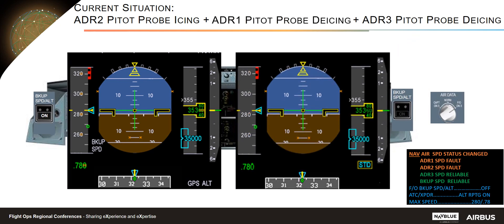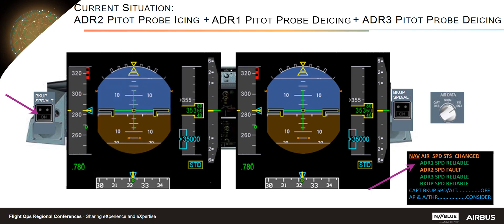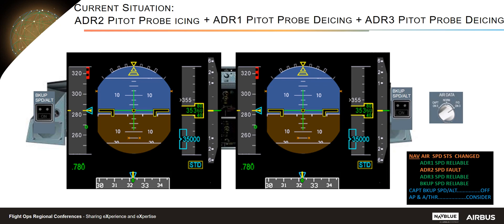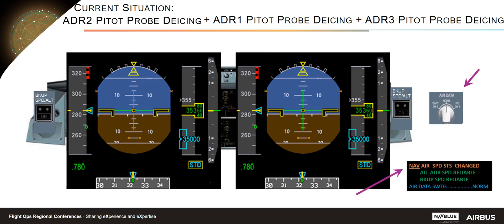Then ADR1 speed becomes available again and is consolidated with the digital backup speed. ADR1 is recovered, the backup speed altitude push button is set to off, and PFD1 recovers ADR data. In this case, autopilot and autothrust engagement can be considered — two ADRs are now consistent with the digital backup speed, so autopilot and autothrust may be used again. Finally, ADR2 speed becomes available and reliable again, so ECAM recommends setting the air data selector to norm.